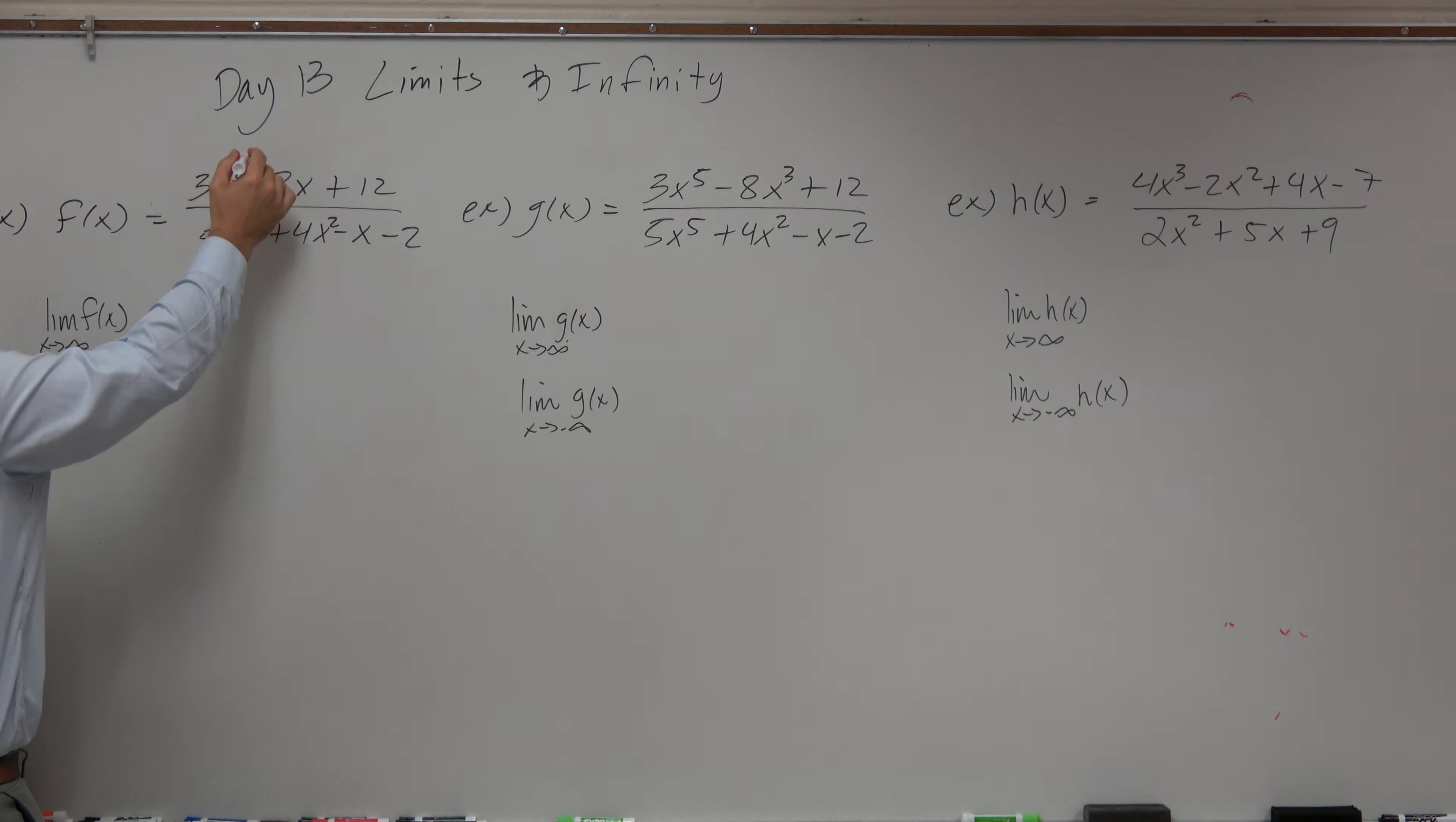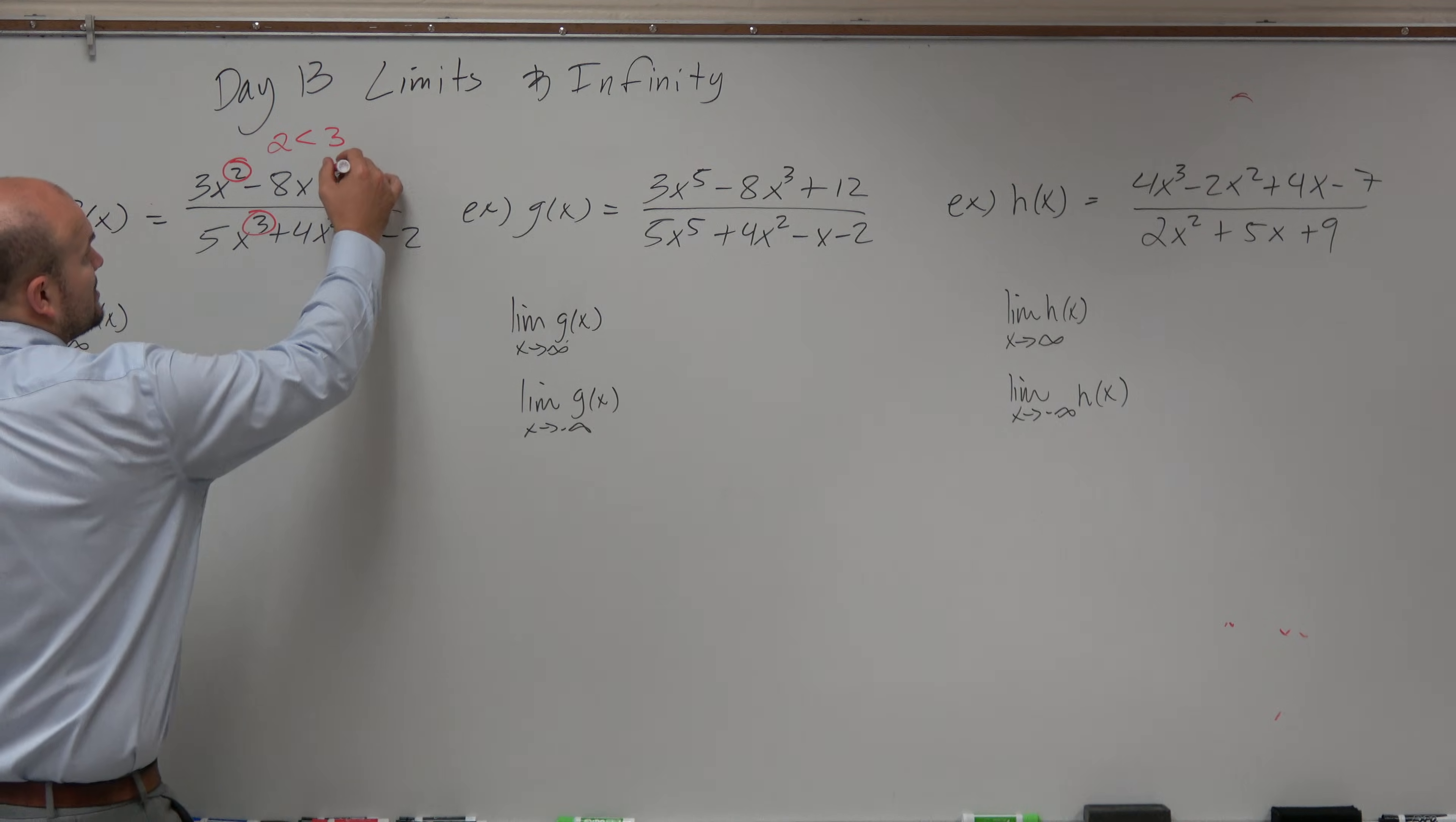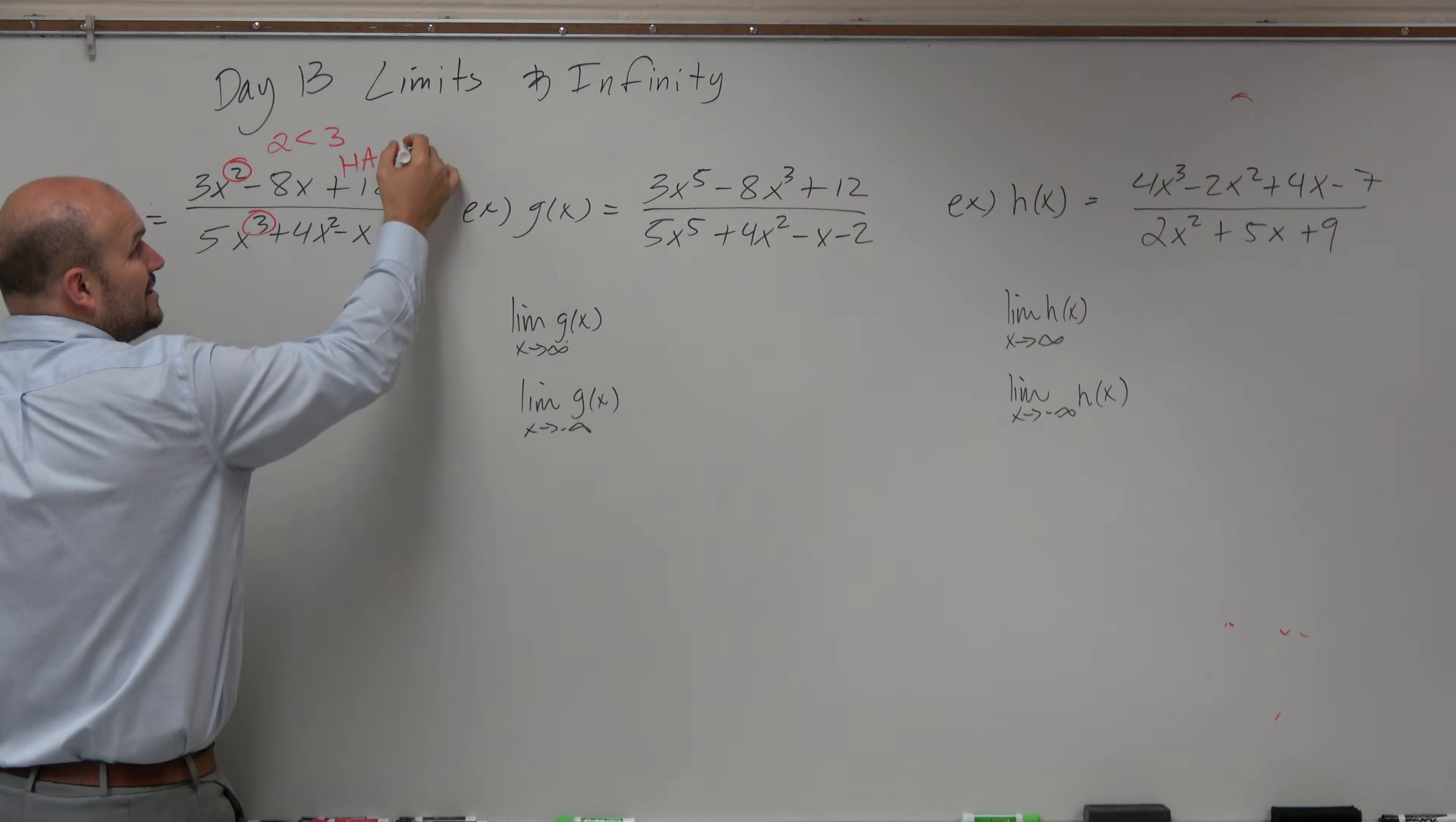And here, the degree in the numerator is less than the degree in the denominator. Correct? Right? So, 2, obviously, is less than 3. So, if you guys remember, when the degree in the numerator was less than the degree in the denominator, the horizontal asymptote was equal to 0.